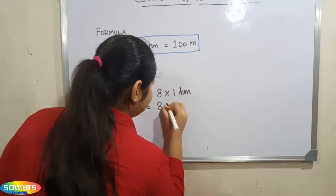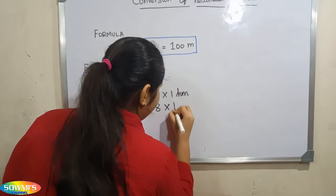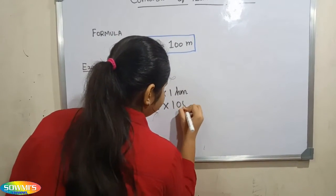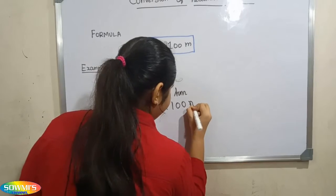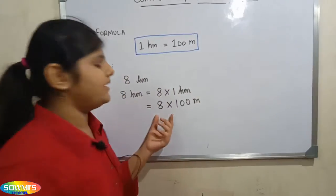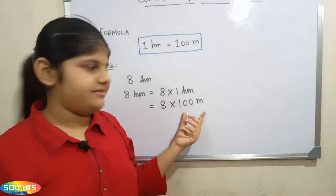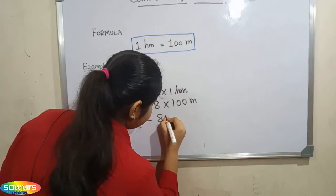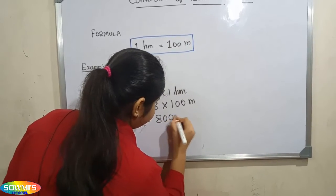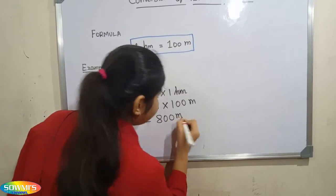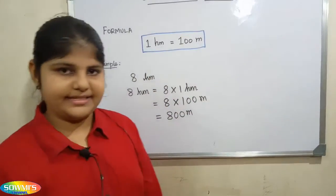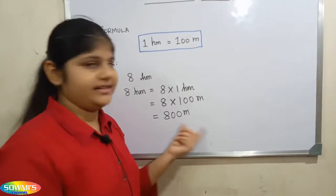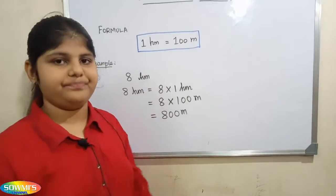So, 8 multiplied by 100 meter. 8 into 100 meter is equal to 800 meter. So, the answer is 800 meter.